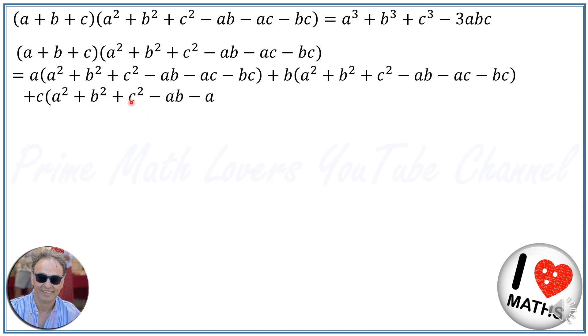Now I multiply a within the expressions, so it will be a cubed plus ab squared plus ac squared minus a squared b minus a squared c minus abc, plus ba squared plus b cubed plus bc squared minus ab squared minus abc minus b squared c.